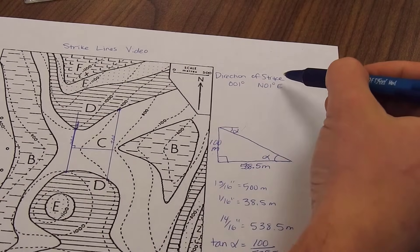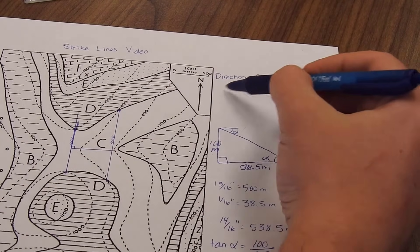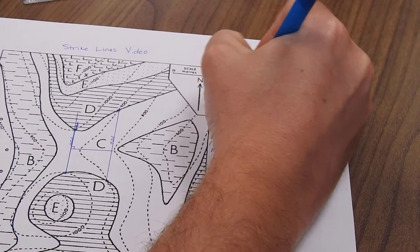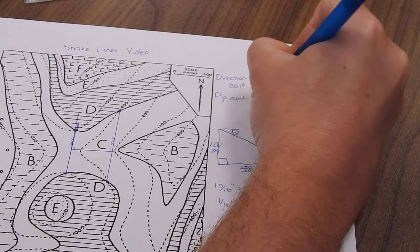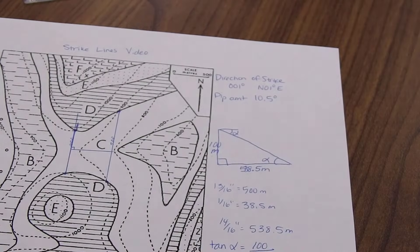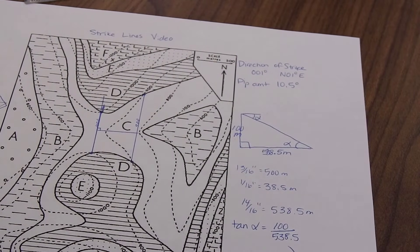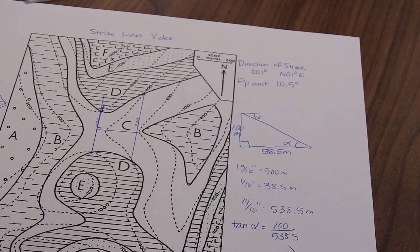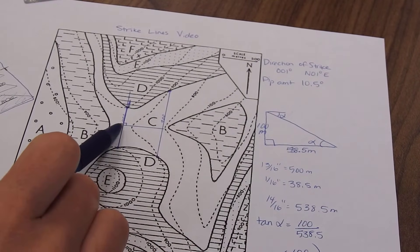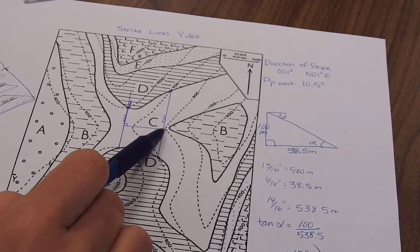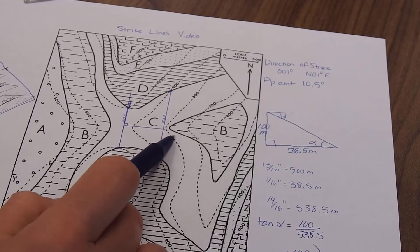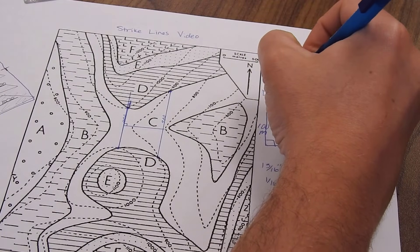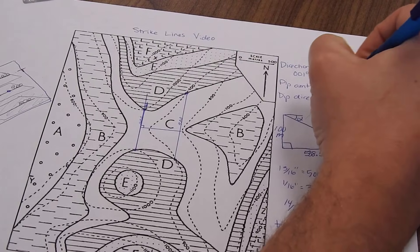So now I have a direction of strike. I have a dip amount. A dip amount is 10.5 degrees. And now I just need a dip direction. So if you're striking north-south, your options for a dip are east or to the west. And here we can say that this is 1000, this is 900, so it's going downhill to the east. Dip direction is to the east.